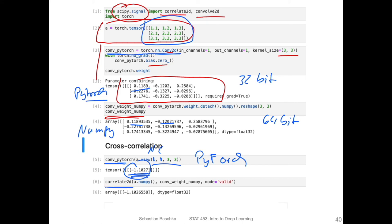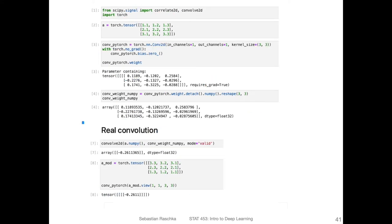Now if I use the cross-correlation function here from scipy, you can see I get exactly the same value. Of course, we have 64-bit precision here, so there are a few more digits, but you can see overall it's also minus 1.102. So it's exactly the same value. So the convolution in PyTorch is the same as the cross-correlation in scipy, and vice versa.